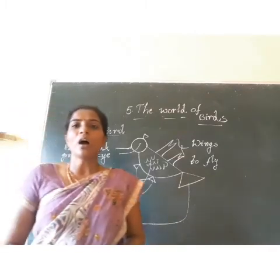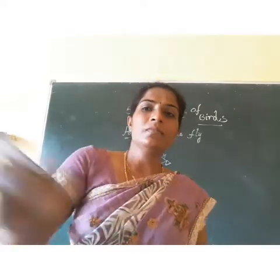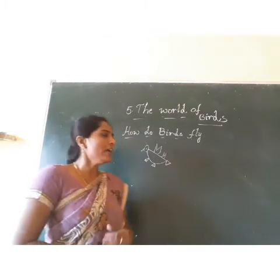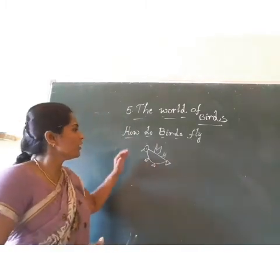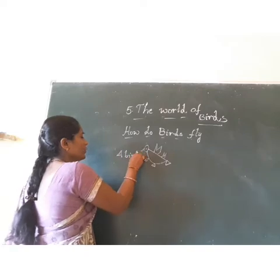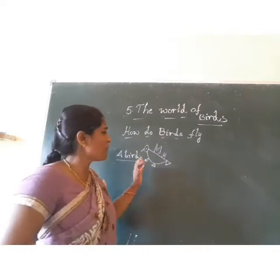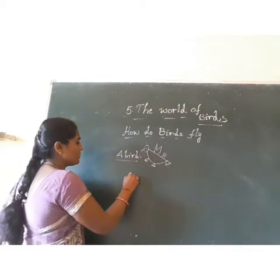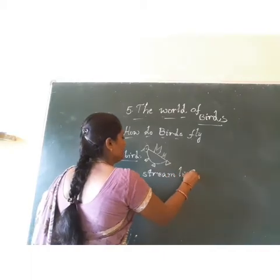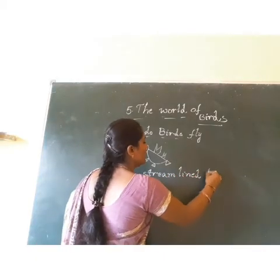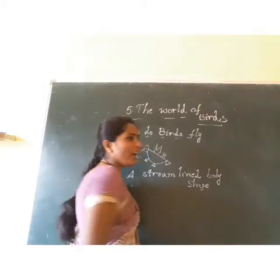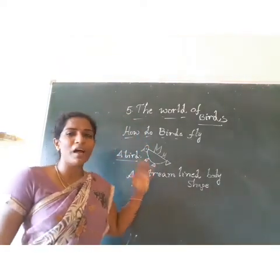These are the important parts of a bird and their uses. Now we have to learn about how birds can fly. See, how do birds fly? Just imagine — what type of shape does a bird have? A streamlined body shape. The birds have a streamlined body shape. With this body shape only, they can fly in the air.